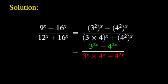Using the basic properties of the exponential function, one can see that 3 squared to the power x is equal to 3 to the power 2x. Similarly, on the denominator, the quantity 3 times 4 to the power x can be fully expanded as 3 to the power x times 4 to the power x. And 4 squared to the power x is equal to 4 to the power 2x, as on the numerator.